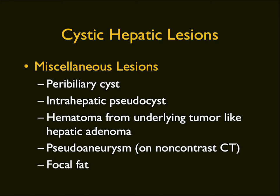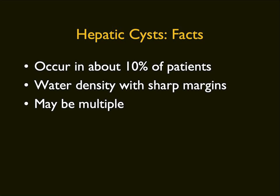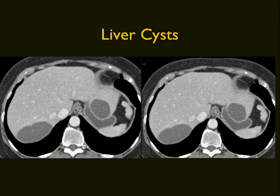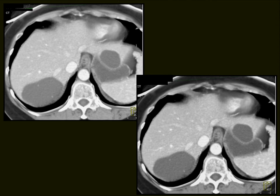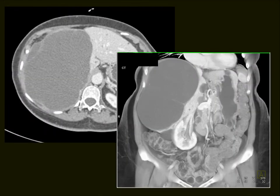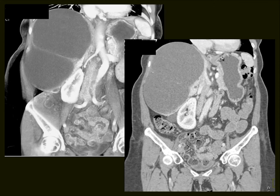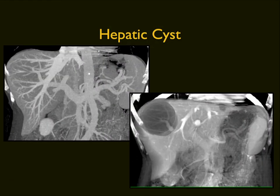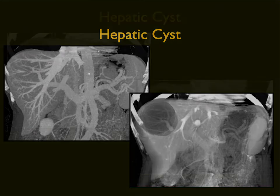Hepatic cysts are present in at least 10% of patients. The better the scanner, the more cysts you pick up, particularly in older patients. They are water density, well-defined, occasionally with thin septations. Simple cysts do not enhance and do not truly distort vessels unless very large. Cysts can be symptomatic when very large due to capsular stretching and mass effect — even a benign lesion can be problematic and may require intervention. Even large cysts often don't create significant issues with the vasculature.